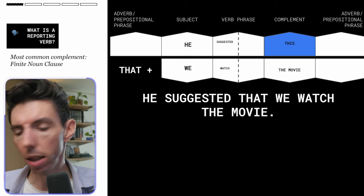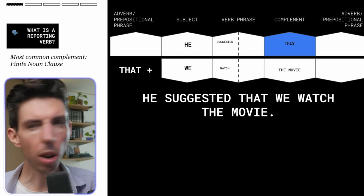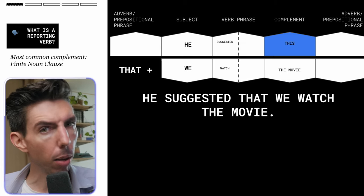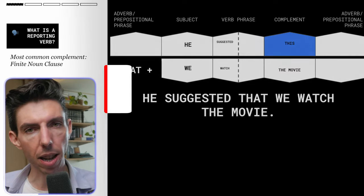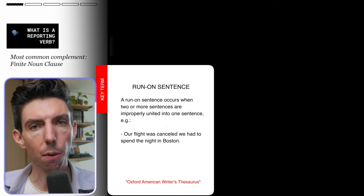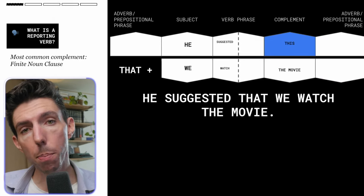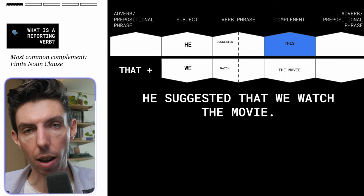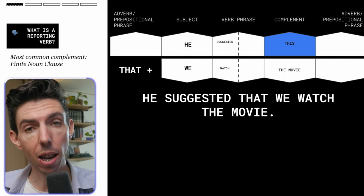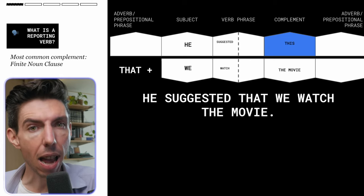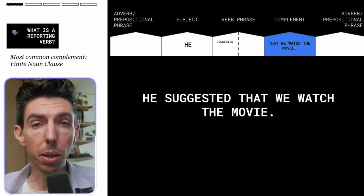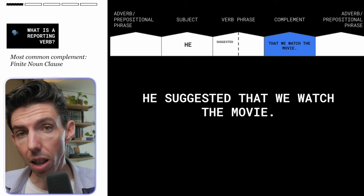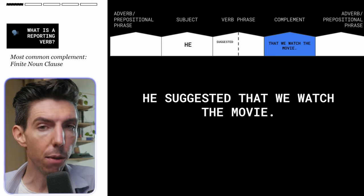Attaching 'that' takes the clause and lets us use it as a noun. Without it, if you say 'he suggested we watched the movie,' a native speaker would understand you, but grammatically you have a run-on sentence — two finite clauses side by side, which doesn't work. So if you want to put a clause into the complement position of the main clause, you need a subordinator. What you then have is a finite noun clause — it's a finite clause functioning as a noun because of the subordinator 'that.'